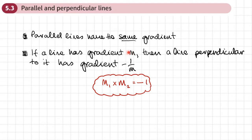For example, if this gradient is 5, this gradient here would be negative 1 fifth. If this gradient here was 2 thirds, this gradient here would be negative 3 over 2. Another way of stating this is that if m1 and m2 are the gradients of two lines, the product of their gradients is always equal to negative 1 when the lines are perpendicular.